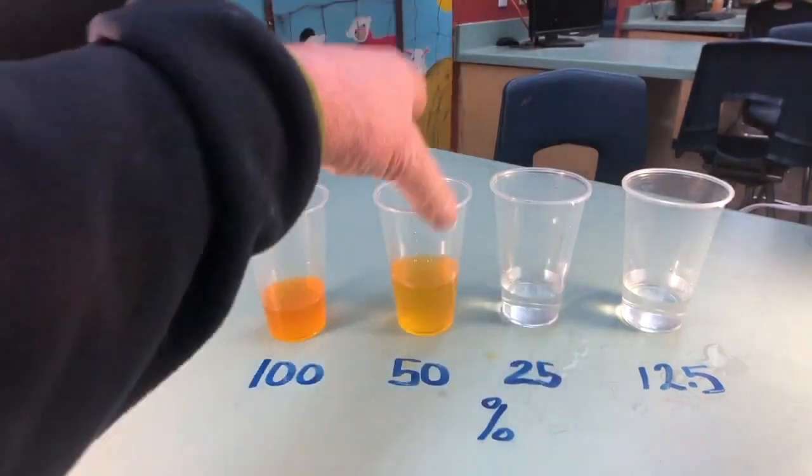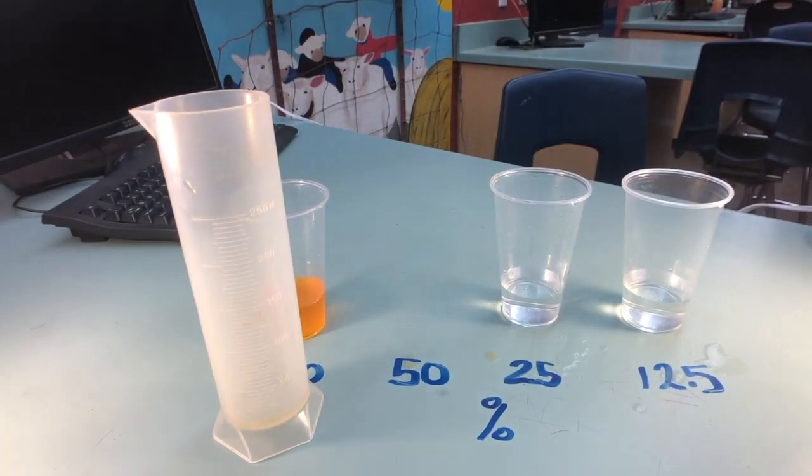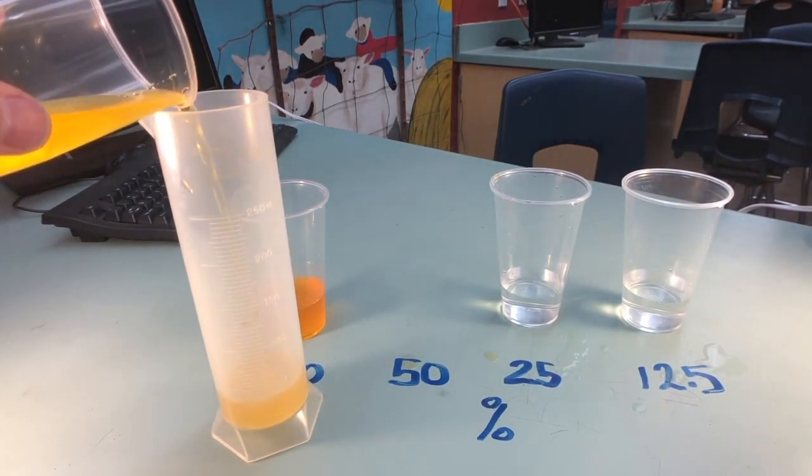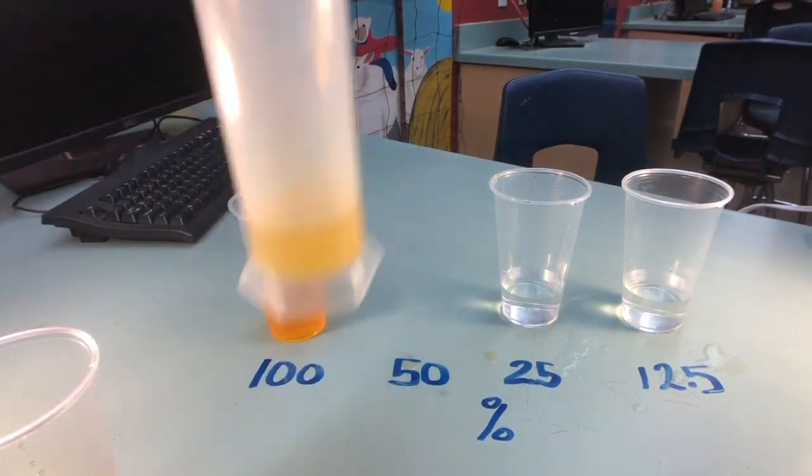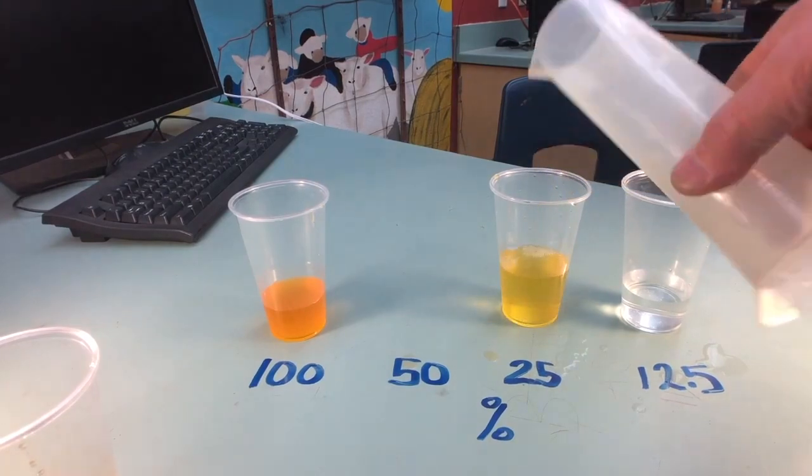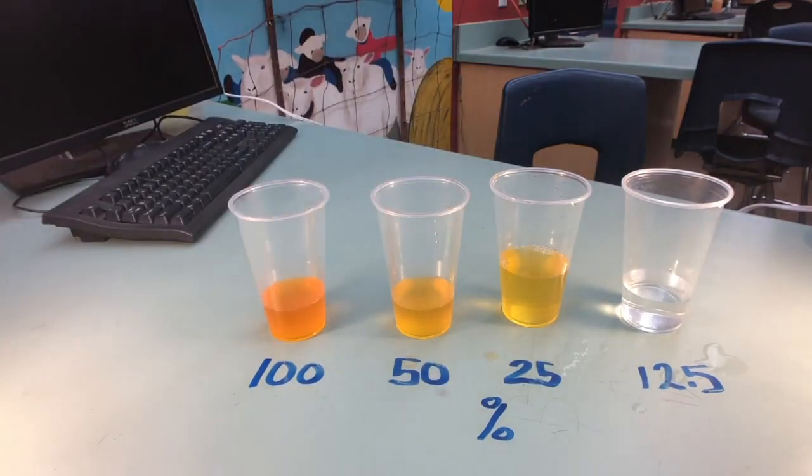And now we're going to take 50% or 50 ml's of the 50% solution and put it in the graduated cylinder. Once I've done that, make sure that again it is accurate. That's why you set it on the table. And then we'll just pour it straight into the 25%, making it 25% solution of Gatorade or of salt.